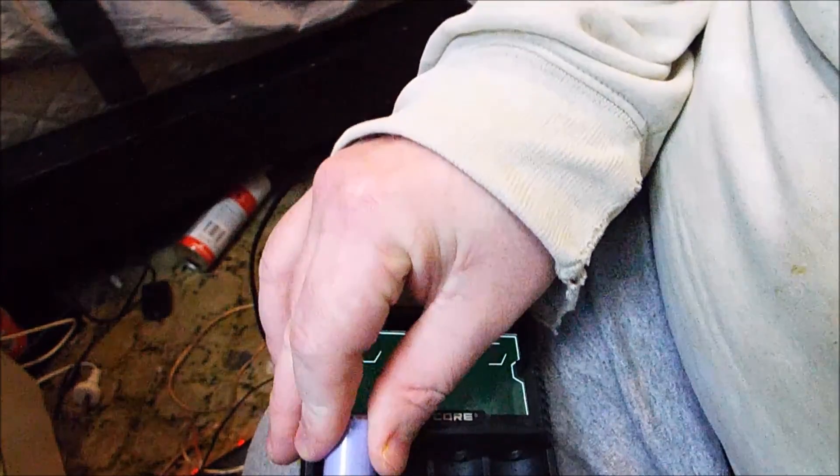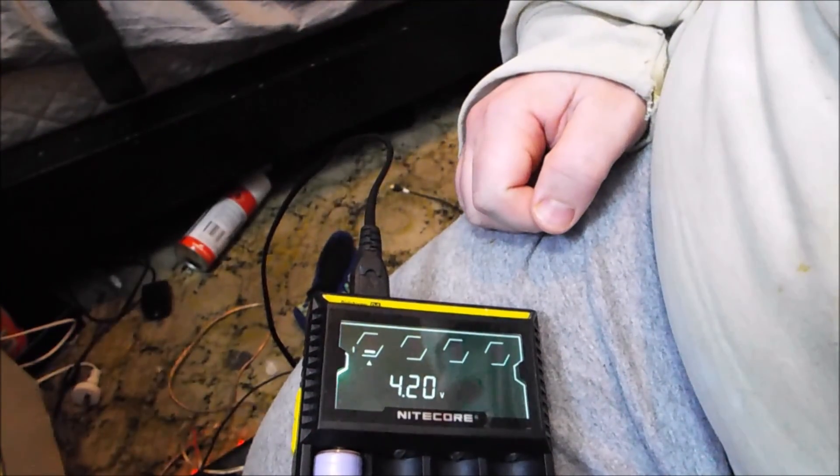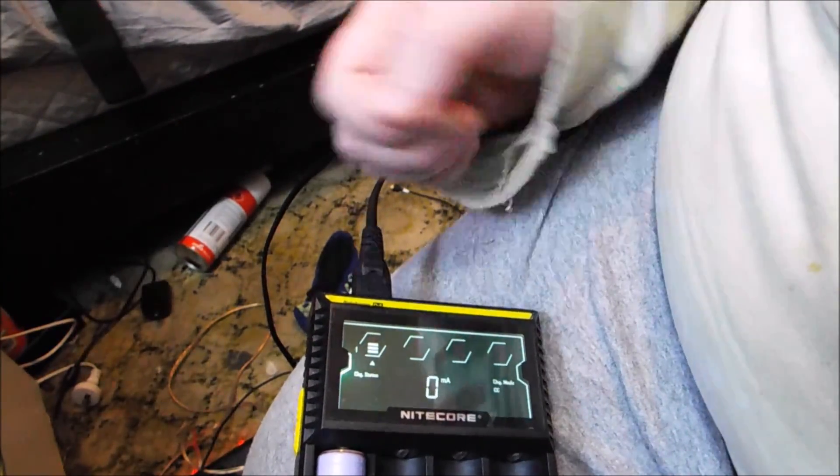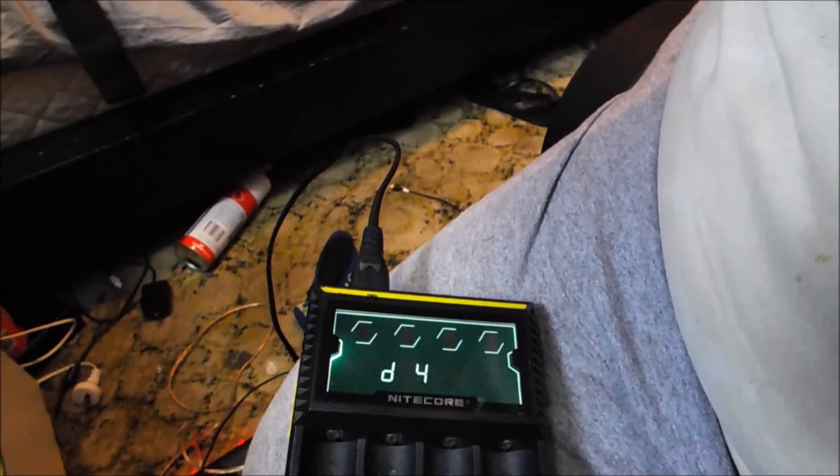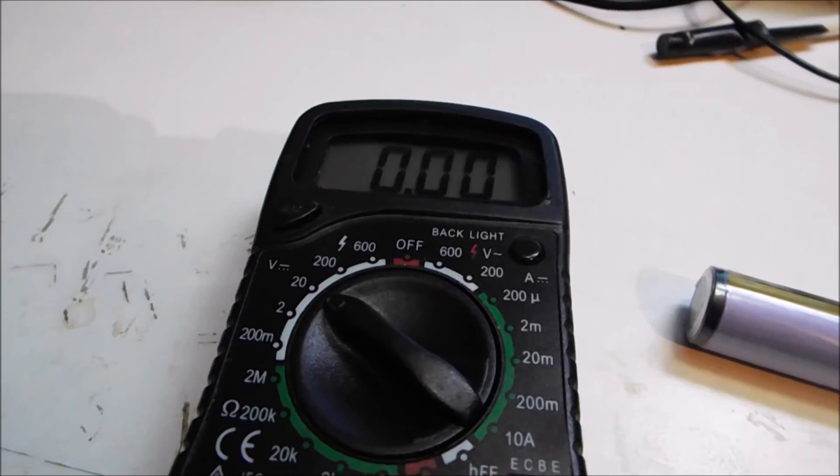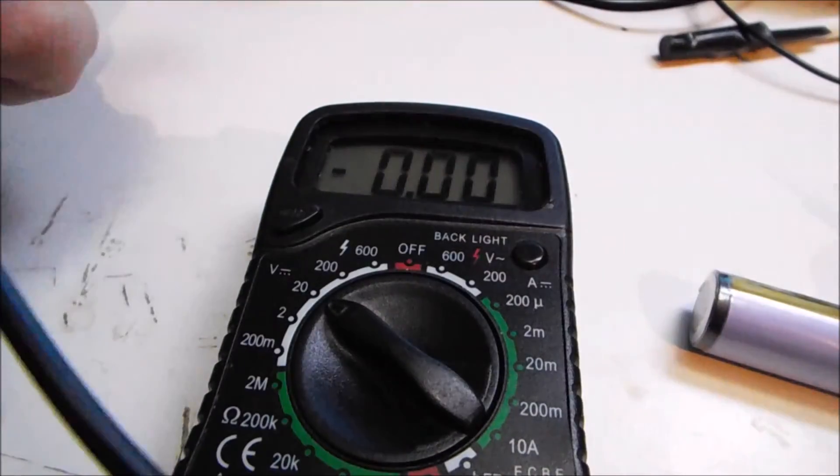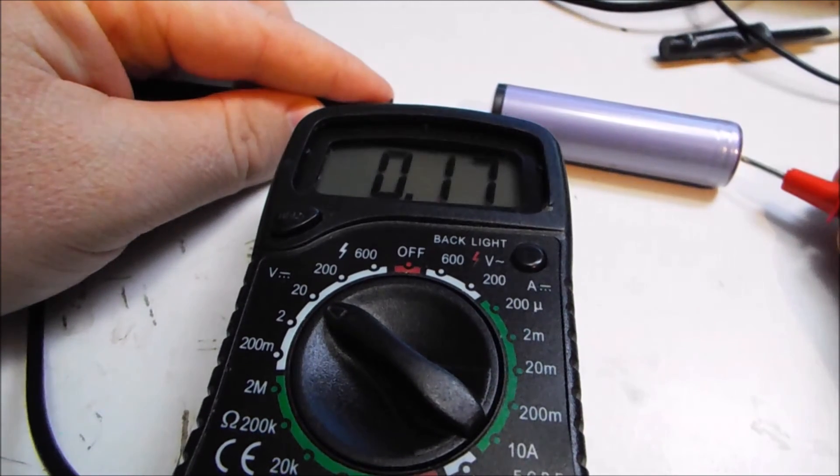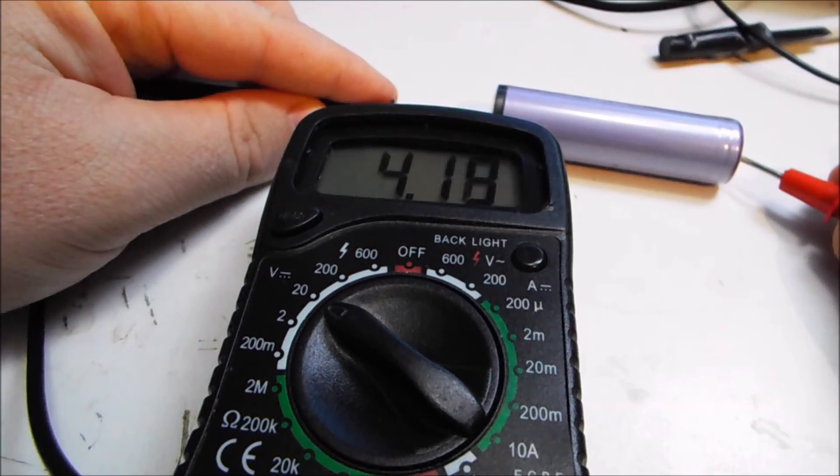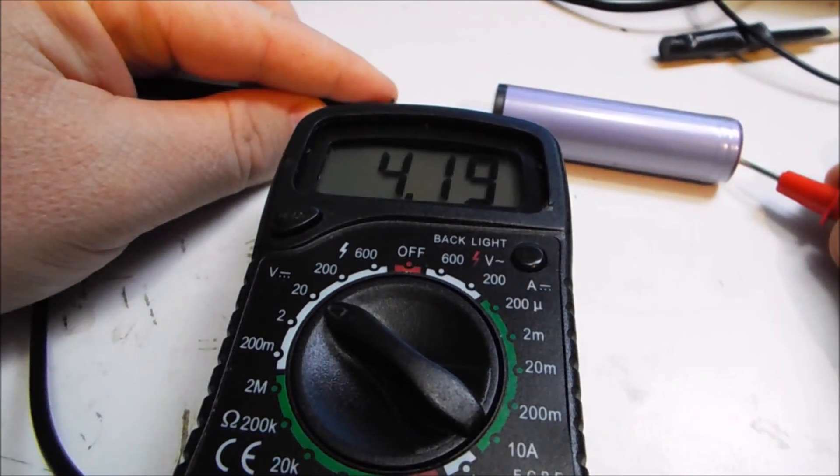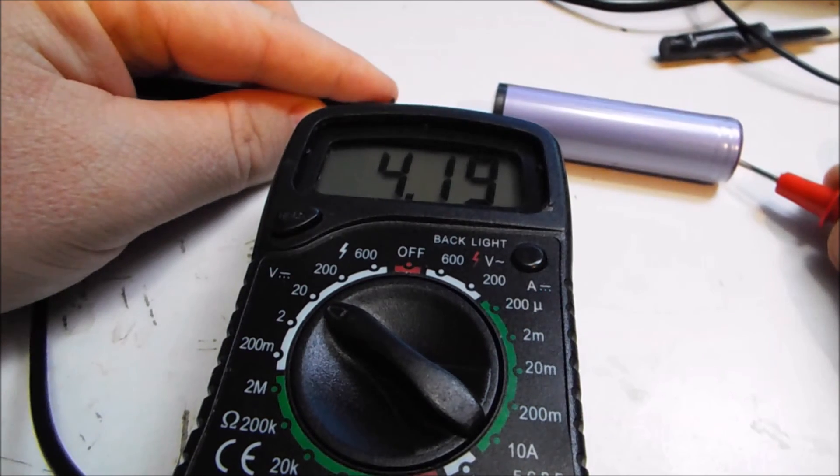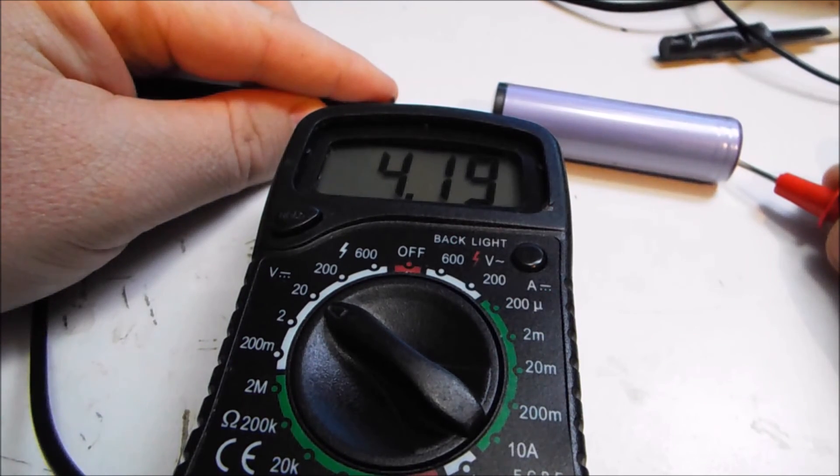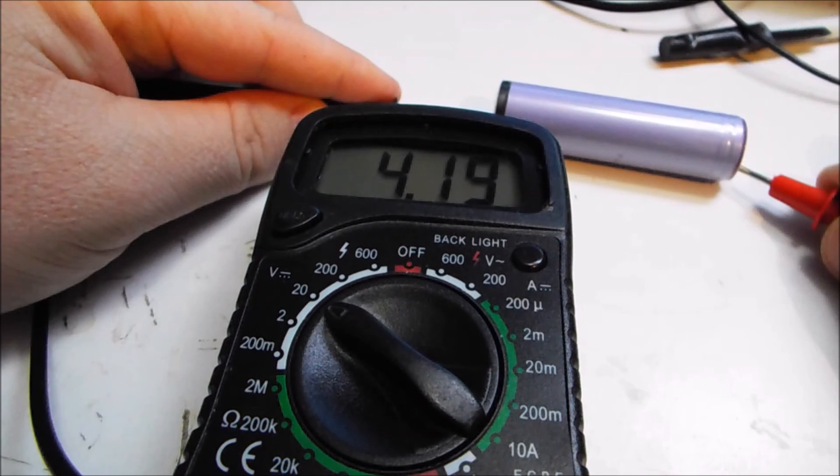Right now, here we go. So you can see that says 4.20 volts. Now we'll check the multimeter, how many volts that says. Okay, so you can see the multimeter is reading the battery as 4.19 when the charger said it was 4.2. So we'll take it apart and check out how it goes.